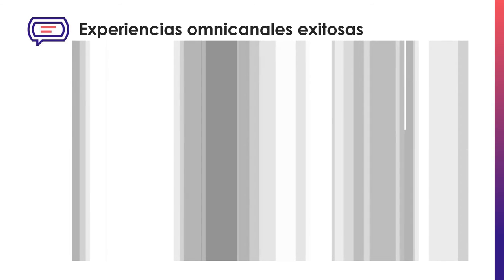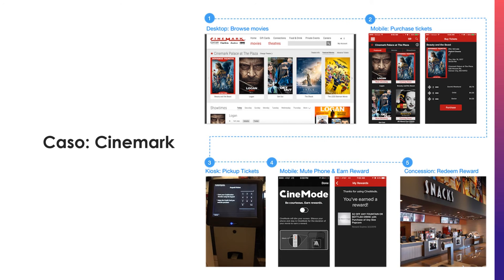In this section, we will look at some omnichannel experiences and how they have achieved unexpected success. One successful case is Cinemark, which has implemented an omnichannel design covering web, app, and multimedia platforms within their own theaters. You can buy tickets from the app or the web, and even receive email communications from Cinemark related to your experience.